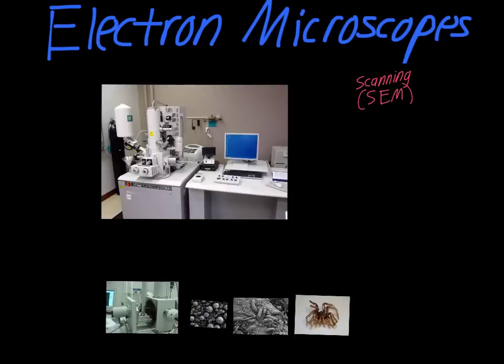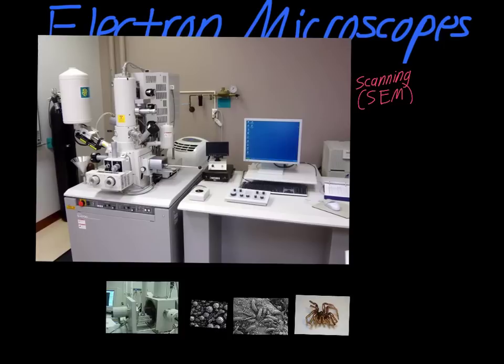Scanning electron microscopes are huge pieces of equipment — they can take up a whole entire section of a laboratory. If we look at this one here in the picture, you can see they're always coupled with a computer, which reads the data put out by the microscope. These microscopes are much more complicated than the ones we use in class, but also much more powerful. We're limited to around 400 times magnification, while these can go up into the hundreds of thousands of times magnification.